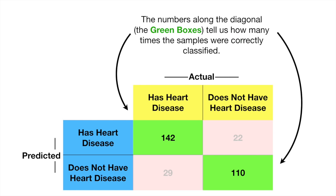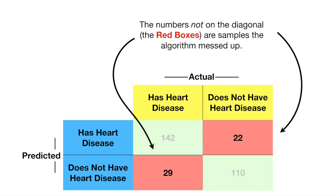The numbers along the diagonal, the green boxes, tell us how many times the samples were correctly classified. The numbers not on the diagonal, the red boxes, are samples that the algorithm messed up.